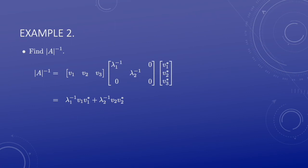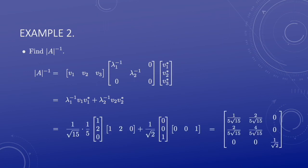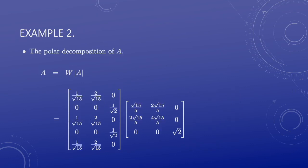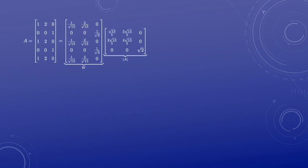In this example, A has a zero singular value, so the pseudo-inverse is not the same as the inverse, which does not exist. We use the spectral decomposition for the pseudo-inverse of the polar. A simple calculation gives this 3 by 3 matrix. Then the partial isometry W is A times the pseudo-inverse of the polar, given by a 5 by 3 matrix. Finally, the polar decomposition is the product of a partial isometry and a positive self-adjoint operator. This is the polar decomposition obtained.